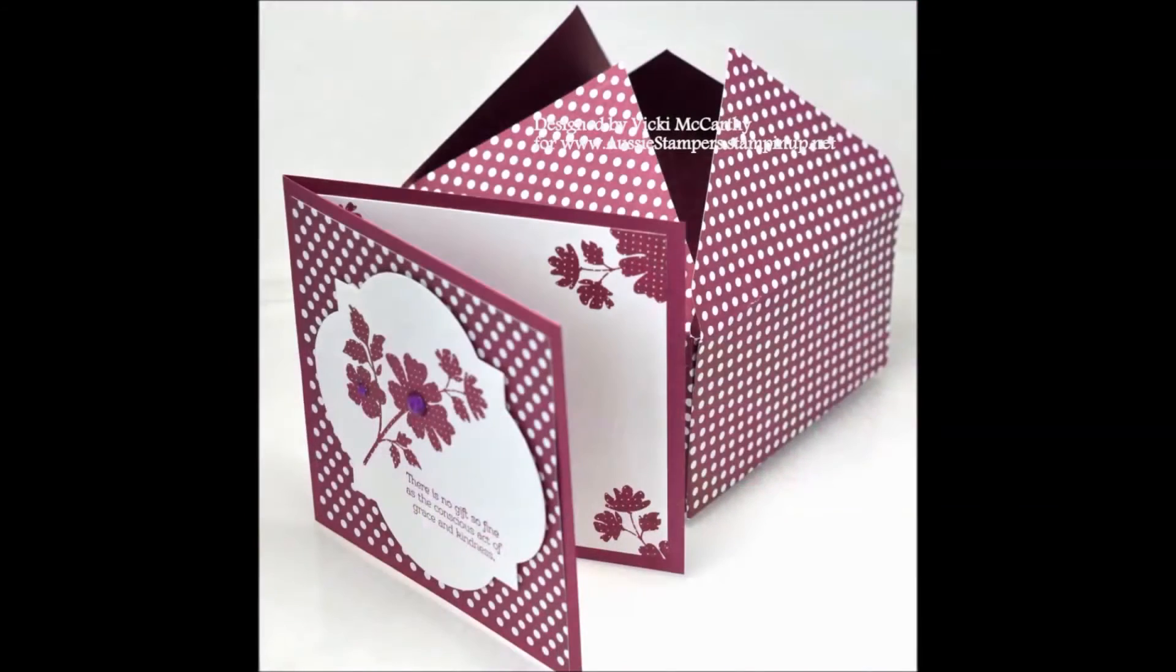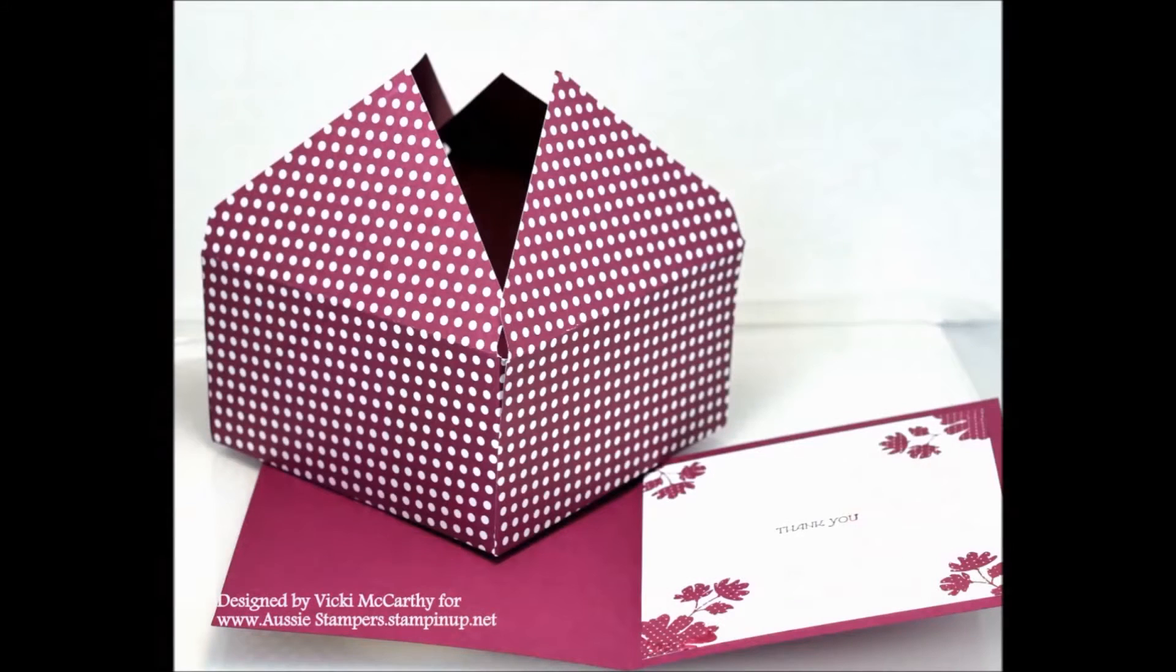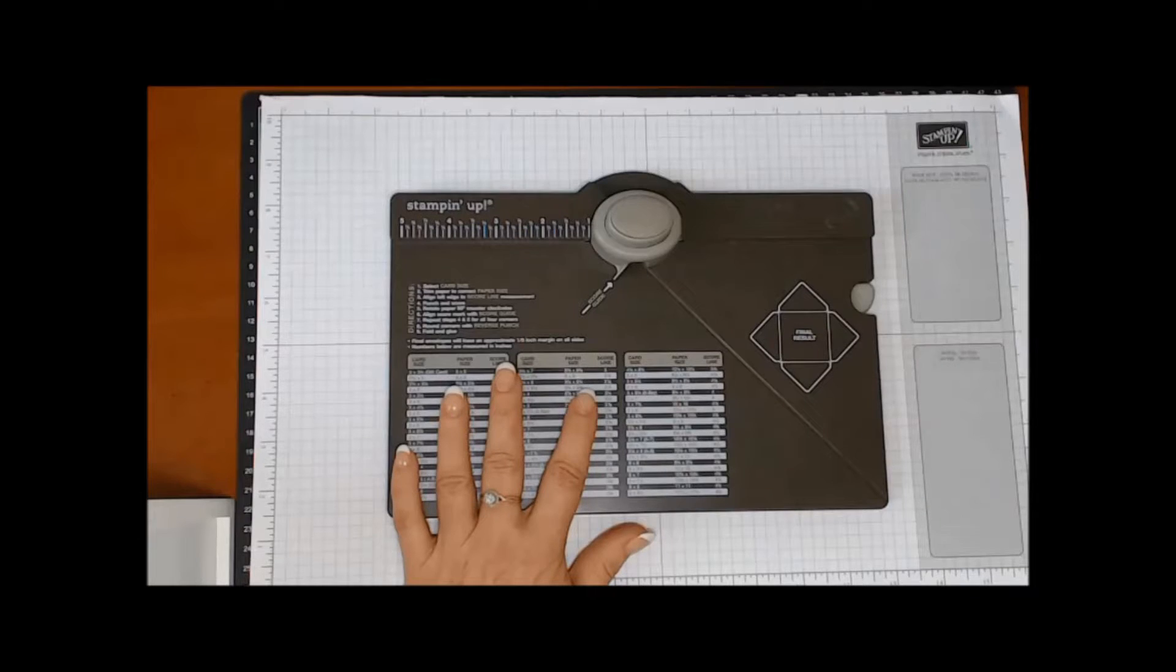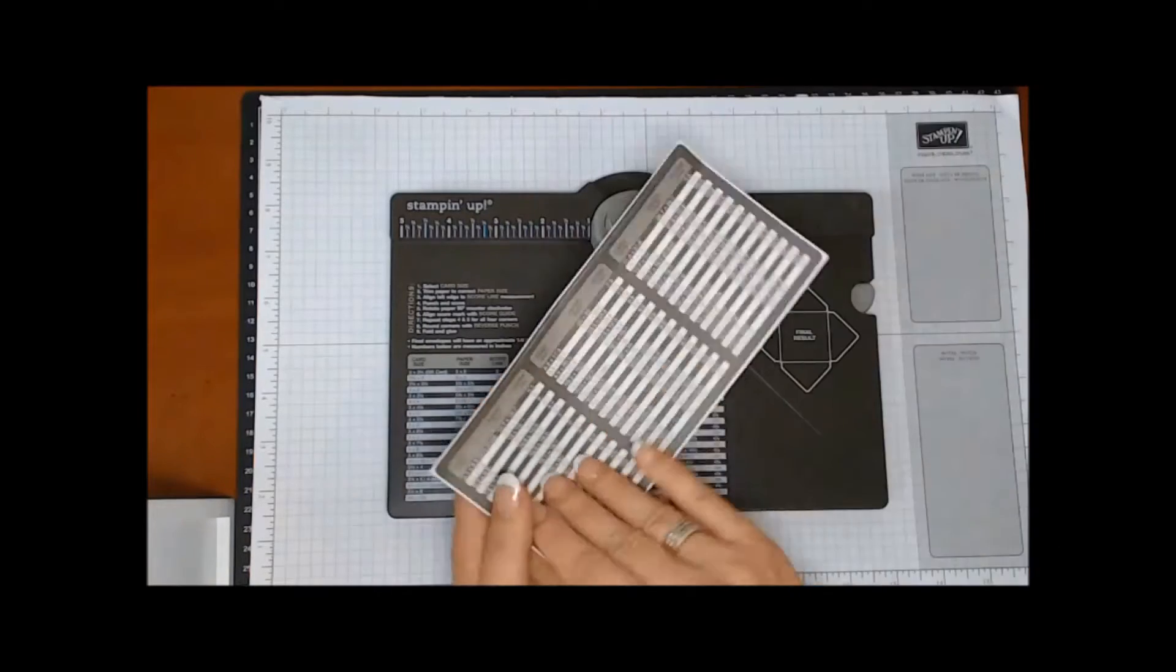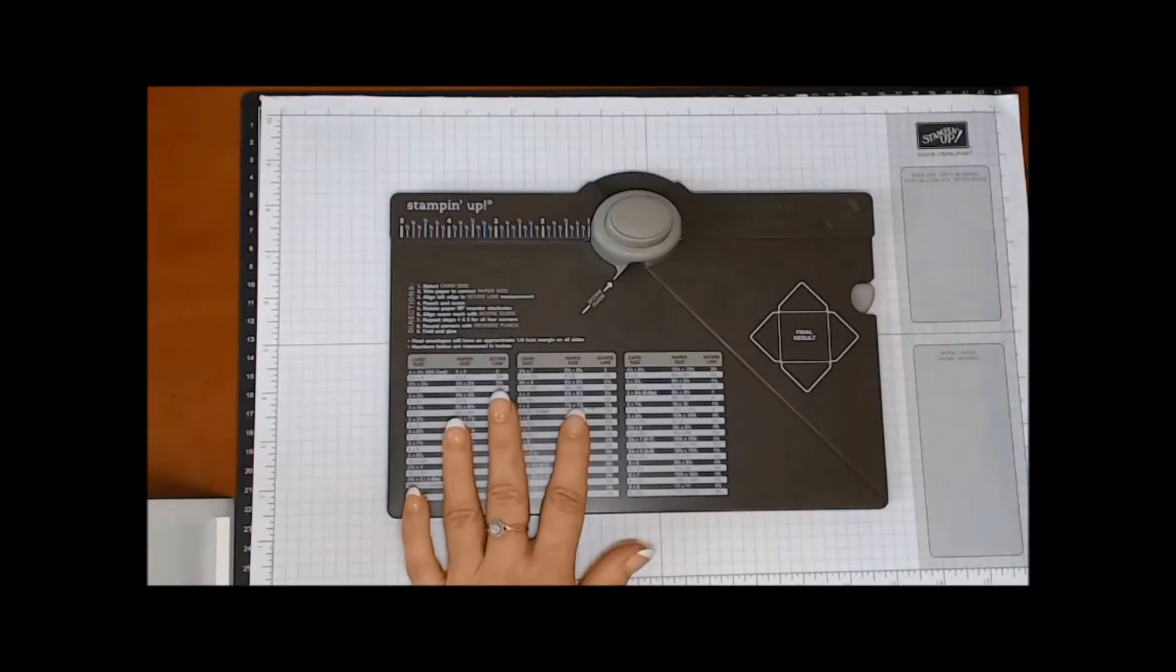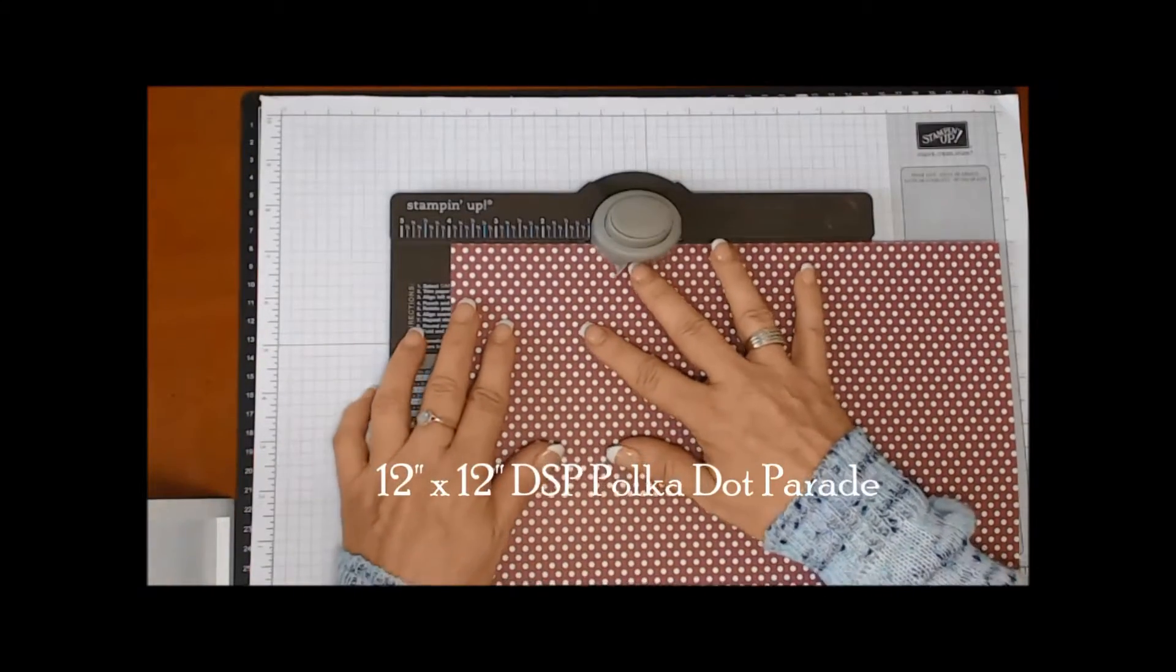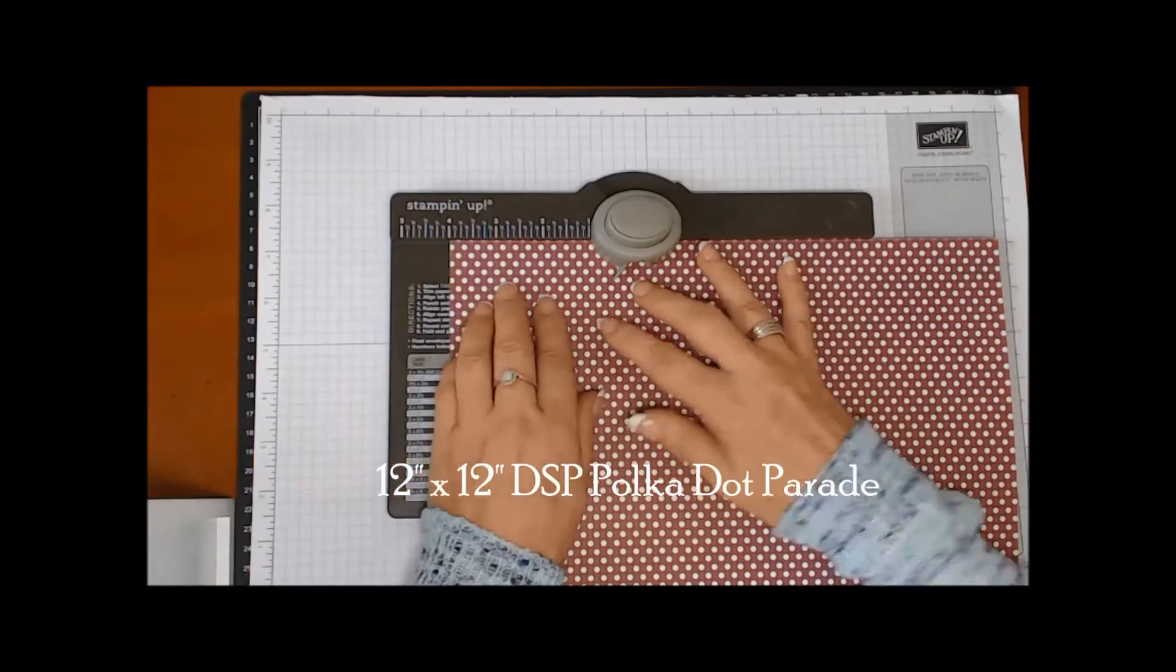Hello, thanks for joining me. It's Vicki McCarthy and I have a whole selection of boxes based on the Polka Dot Parade designer series paper suite. Some projects will be using the envelope punch board, and today we'll be using it. I wanted to point out that it has both metric and imperial measurements, so I'm going to start off with the imperial measurements. With a 12 by 12 piece of paper, you want to line it up at the 4 inch mark.